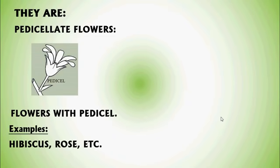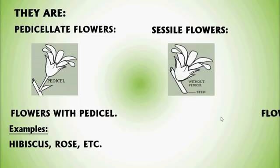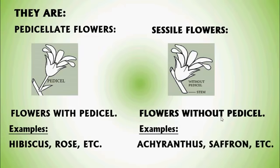Another type is Sessile flowers, defined as flowers without a Pedicel — these are called Sessile flowers. Examples: Echeranthus, Saffron, etc.